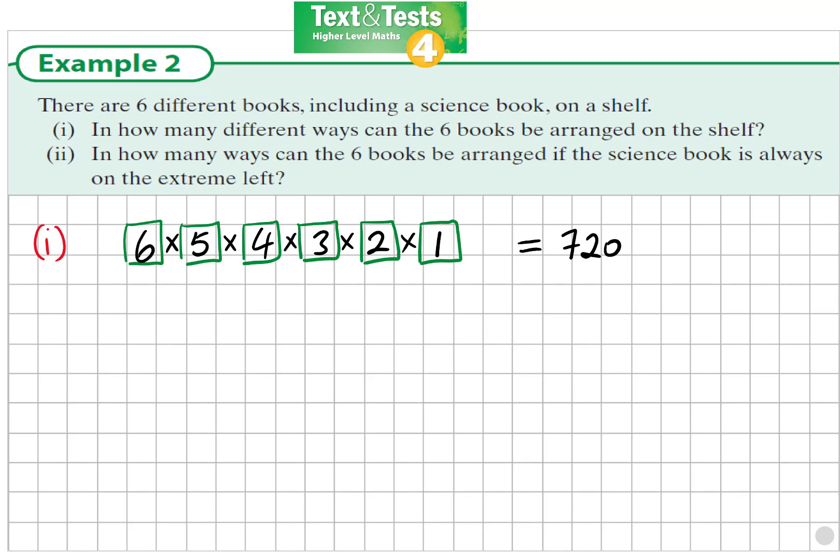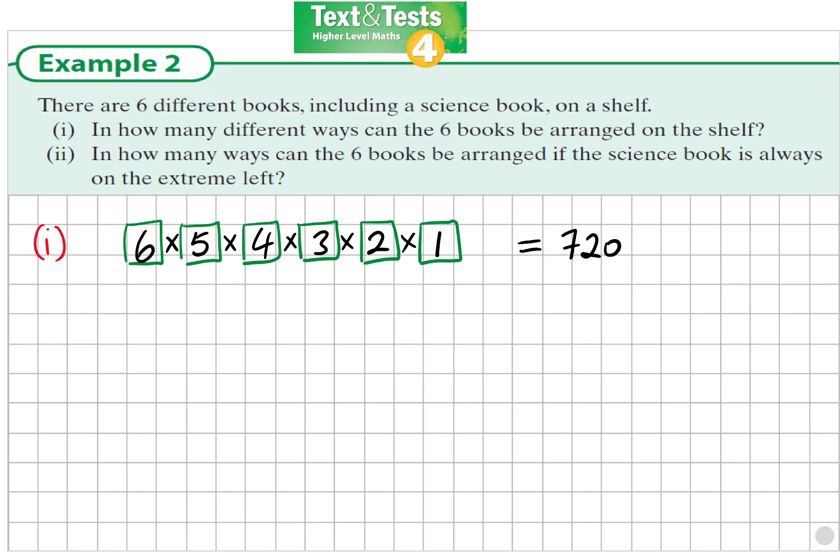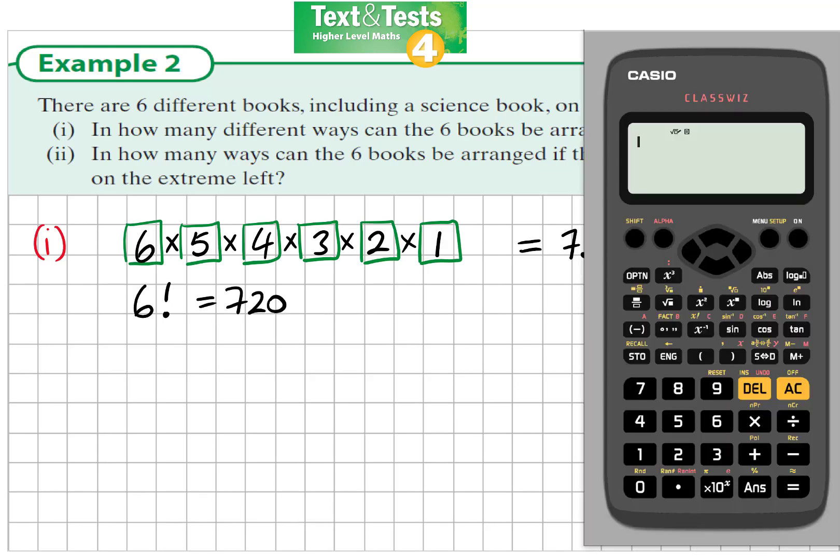There are however two other approaches you might consider. On the calculator there is a button that multiplies immediately six by five by four by three by two by one and it's the factorial button. So if I write in six factorial, I will see the answer is 720. Let me show you that on the Casio calculator. If I write in six, the factorial button is beside the x to the negative one, so shift x to negative one, and six factorial is 720.